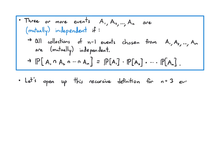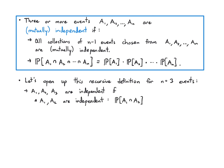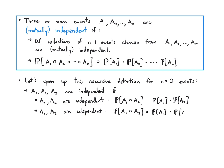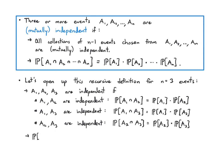For n = 3, A1, A2, A3 are independent if: P(A1∩A2) = P(A1)·P(A2), P(A1∩A3) = P(A1)·P(A3), P(A2∩A3) = P(A2)·P(A3), and P(A1∩A2∩A3) = P(A1)·P(A2)·P(A3). So already at three events, there are four things to check, and that only grows as the number of events increases.